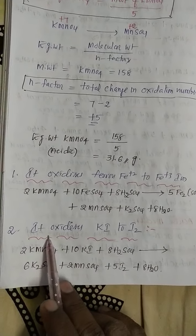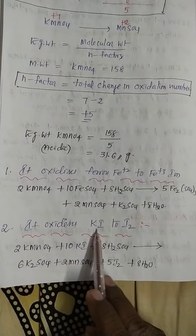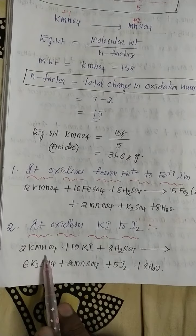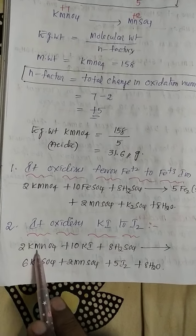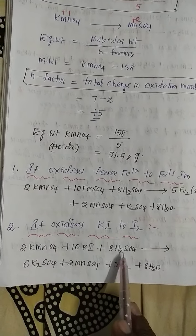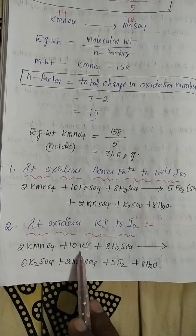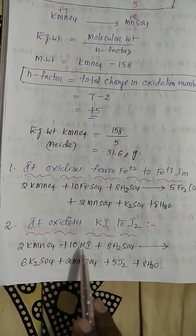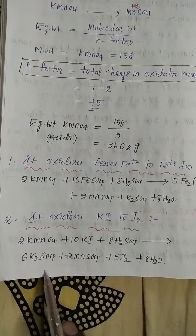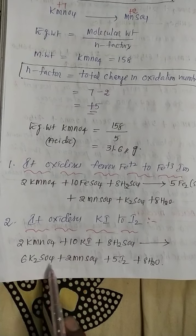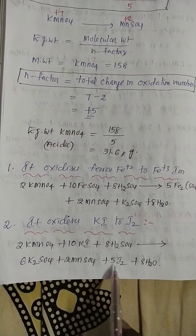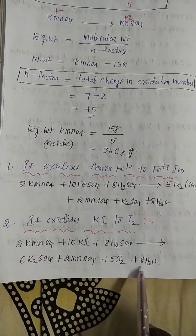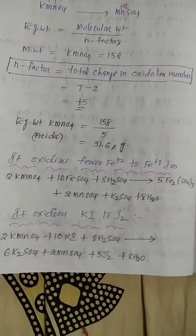Next, KMnO4 oxidizes potassium iodide to iodine solid. KMnO4 reacts with sulfuric acid and KI, converting KI to iodine. The products are 6K₂SO₄ plus 2MnSO₄ plus 5I₂ plus 8H₂O.